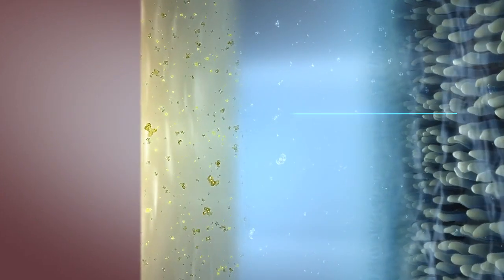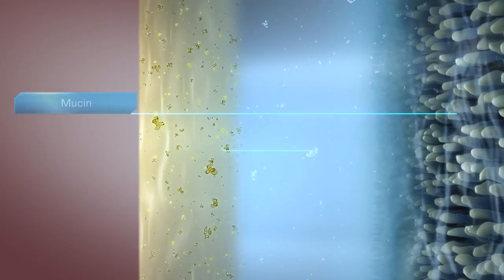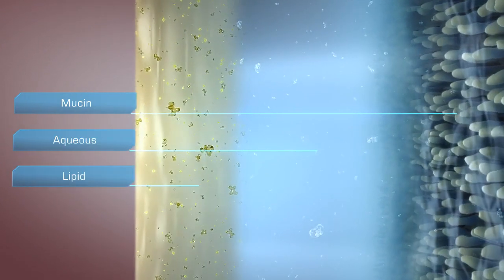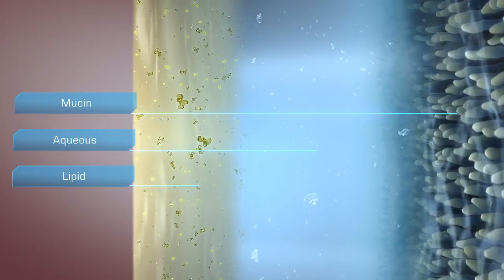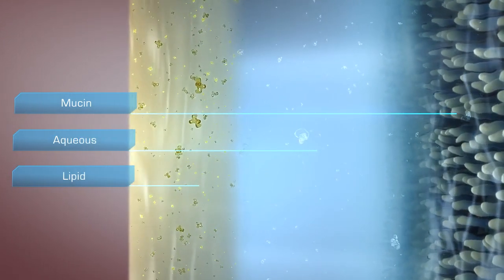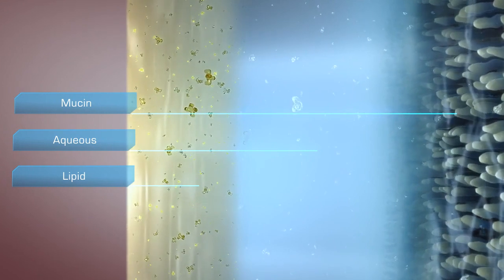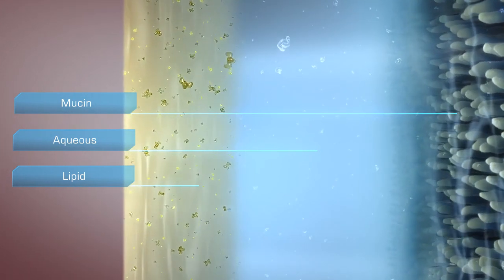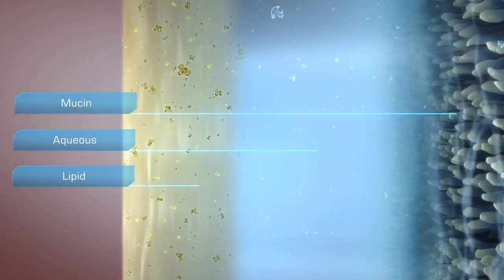The primary components of tears — mucin, aqueous, and lipid — combine to create a complex viscoelastic structure. This complex structure is responsible for a multitude of important functions.